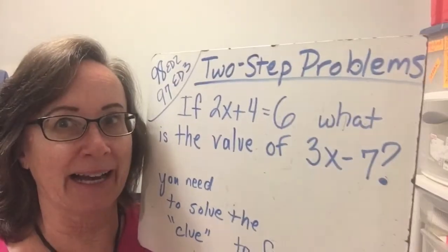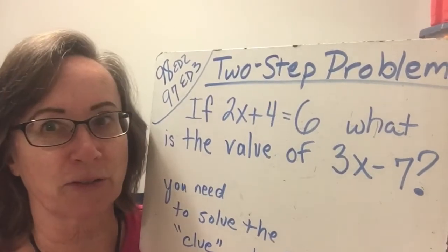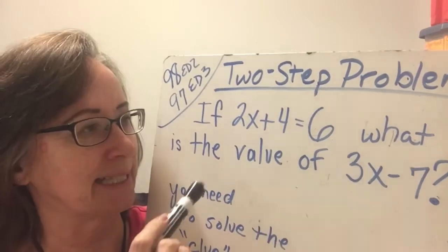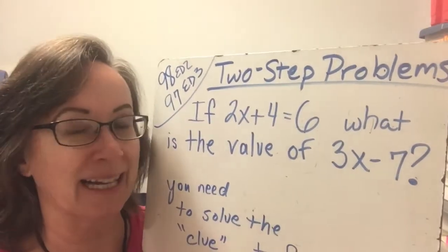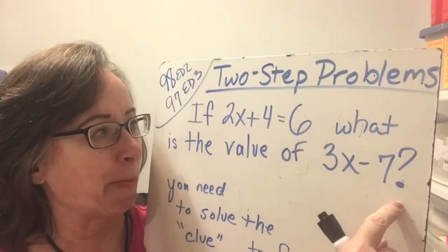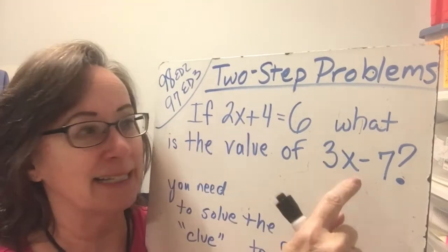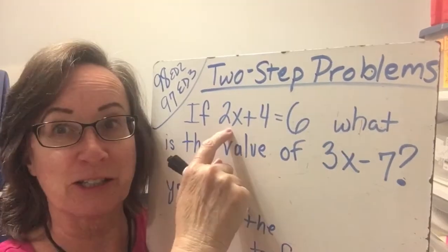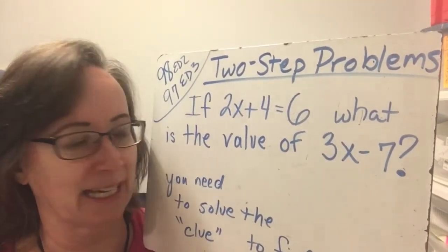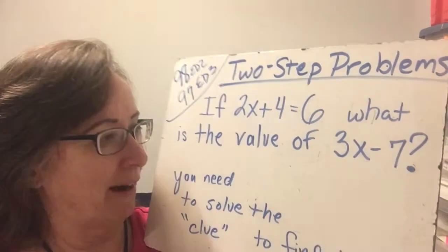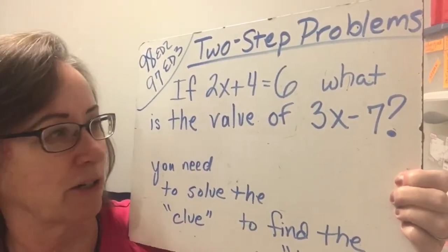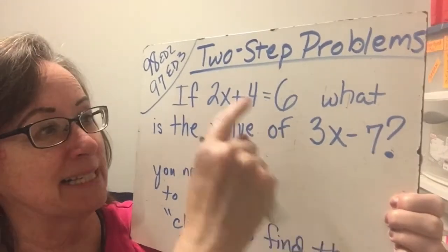And these are kind of like clues for a treasure here. If 2x plus 4 equals 6, what is the value of 3x minus 7? So the problem we have to solve is this one, but this one is the clue that we need to get to this one. So we have to solve this equation to be able to write the result here. It's kind of like a mystery. We need to solve the clue in order to find the treasure. So we have to solve this to get this.